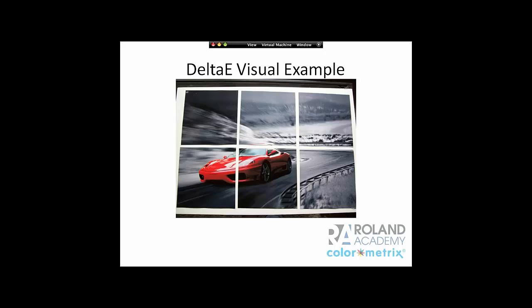What I'm displaying on the screen now is an image which we have intentionally created a delta E shift. Delta E is simply a numeric way to communicate color difference. This was one print, which we printed twice, cut into pieces — these three pieces are printed to one color spec, and these three are printed to another color spec. They're almost 20 delta E apart. That's a very, very big difference — that's why we can see it. Up in the grays, it's fairly easy to see; you might go from a light gray to a dark gray.